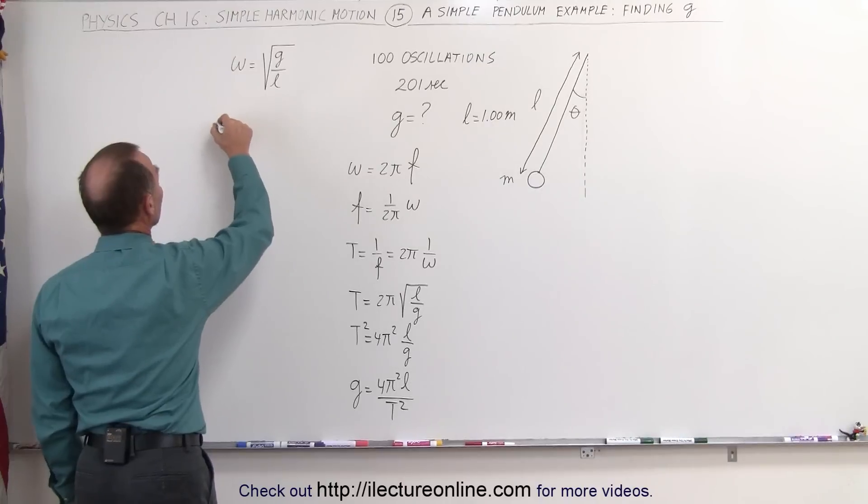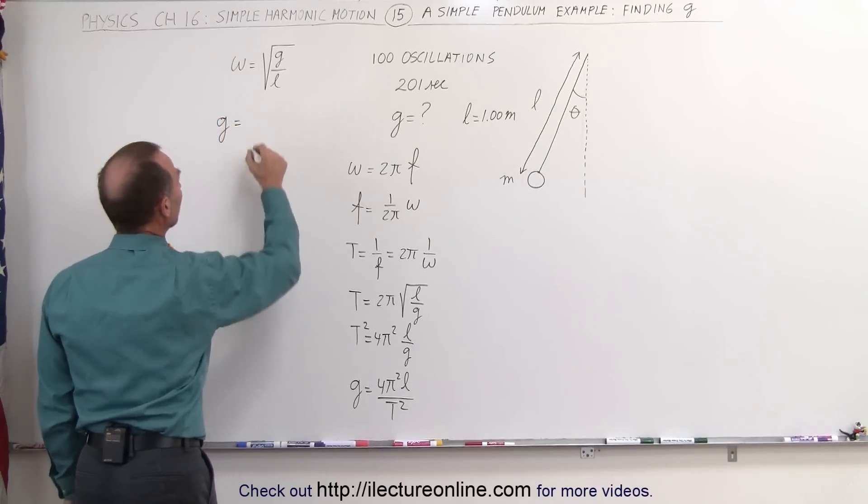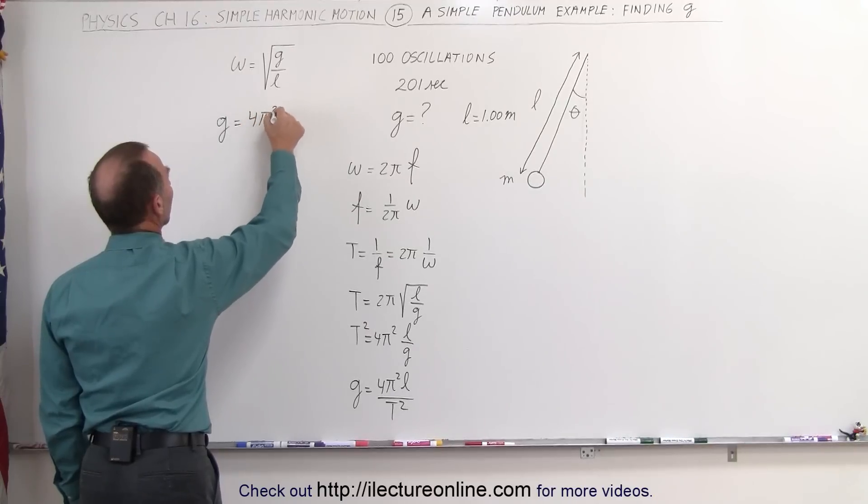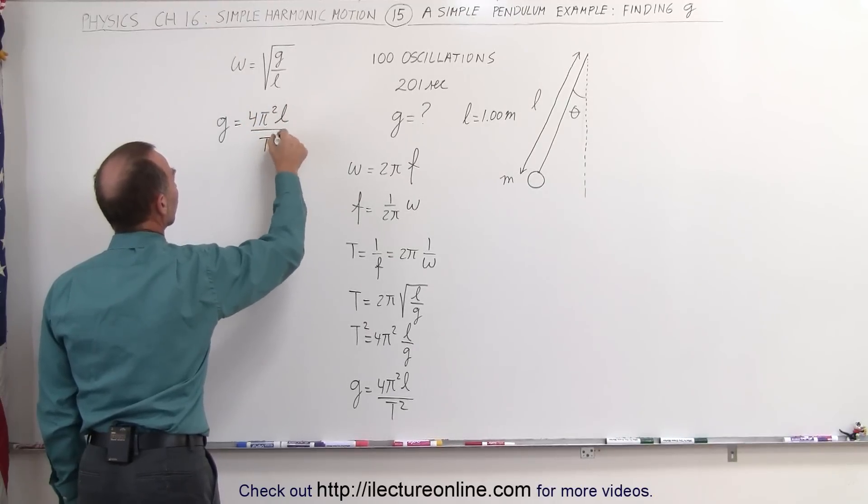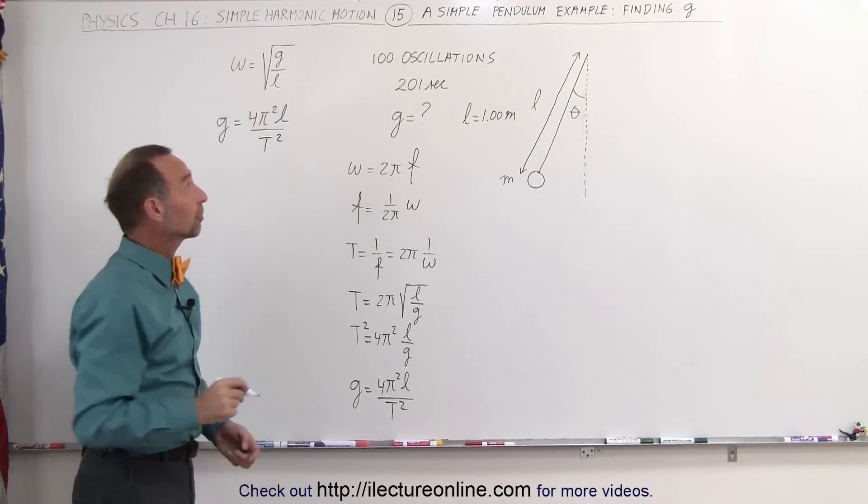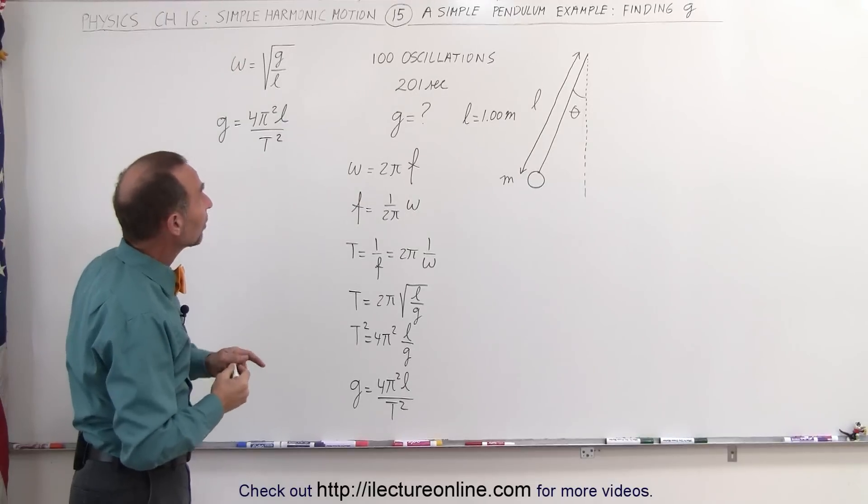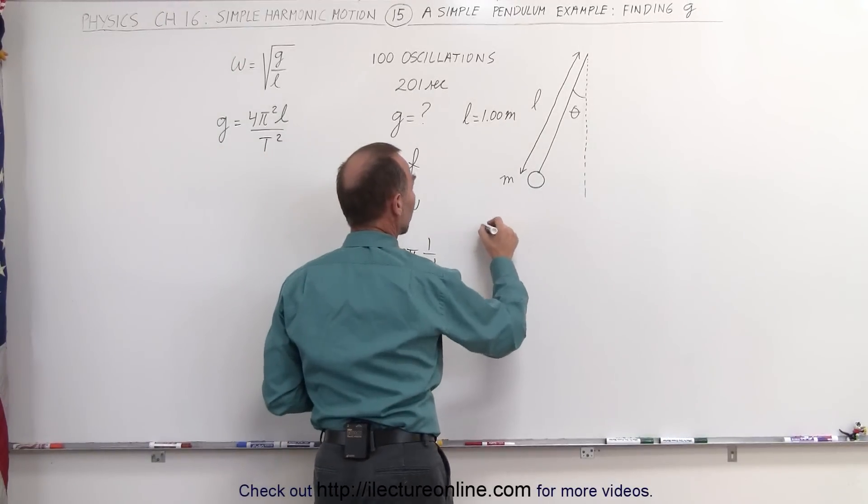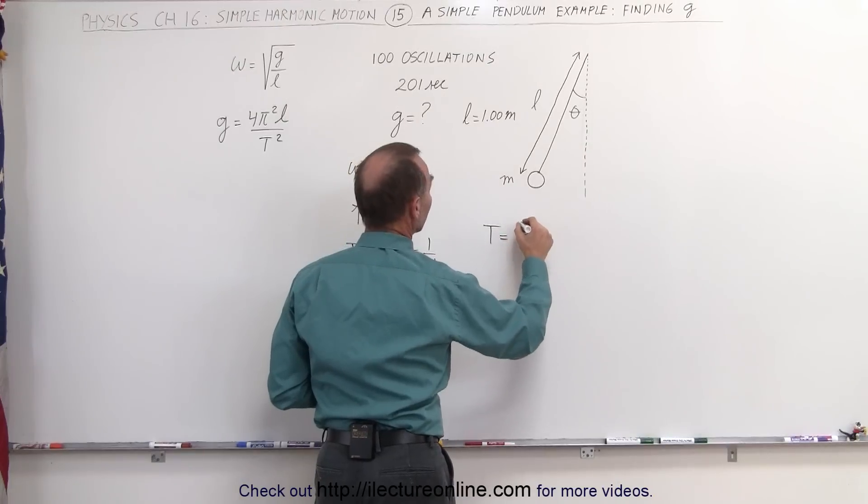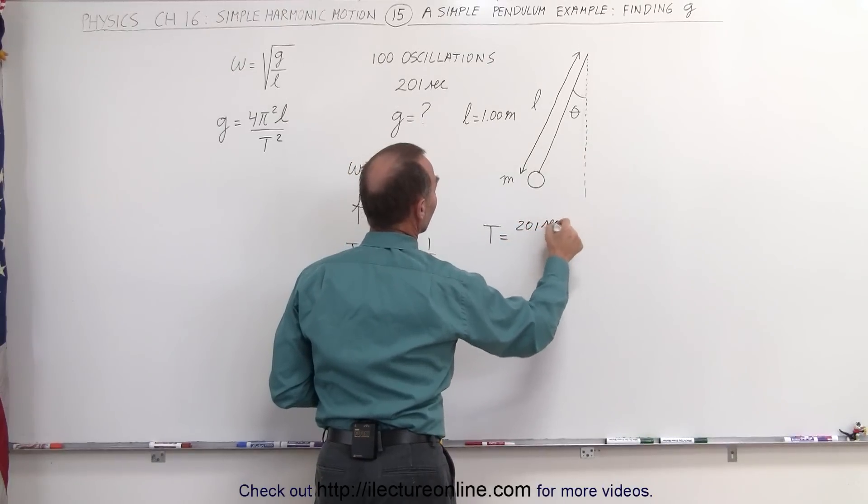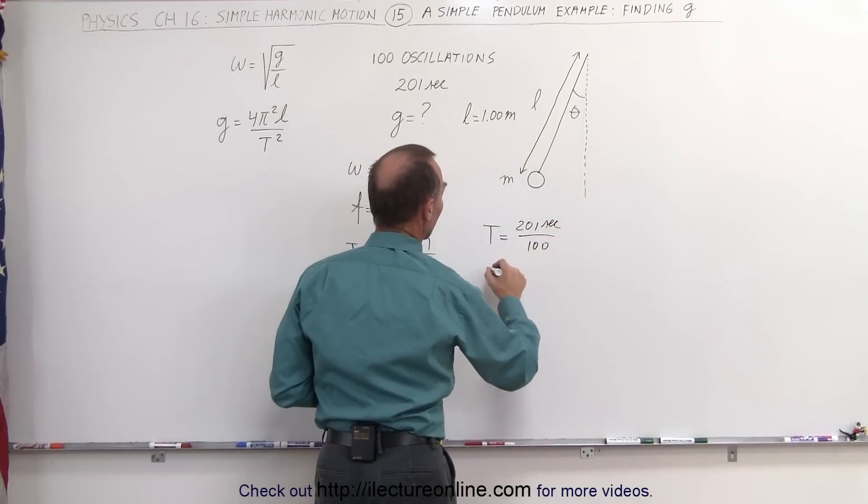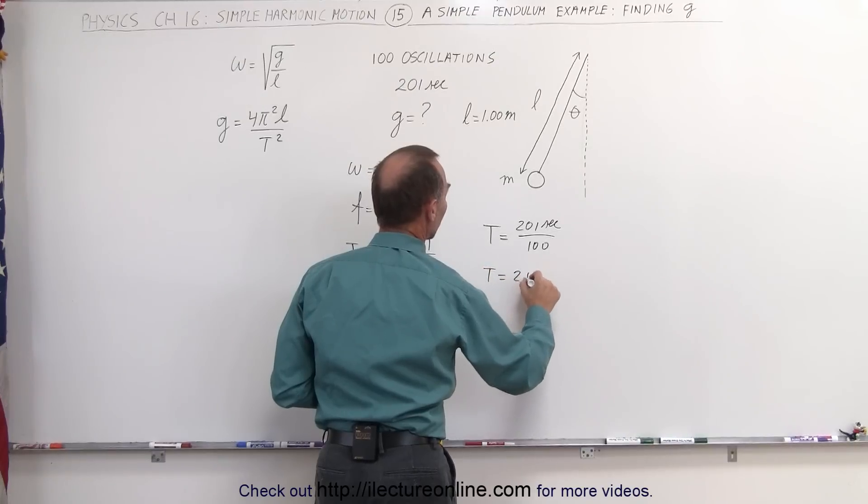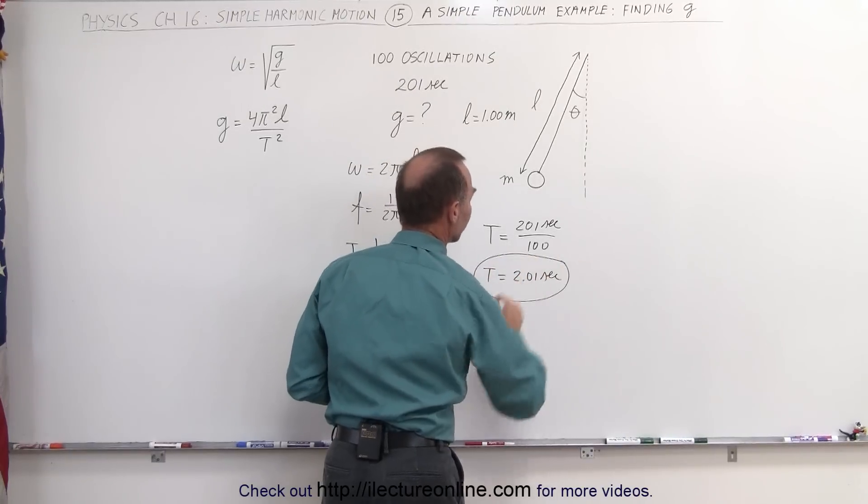If we plug that over here, g is equal to 4π² times the length divided by the period squared. And then we go back to our experiment. We have 100 oscillations taking 201 seconds. That means a single oscillation, the period of a single oscillation, is equal to 201 seconds divided by 100 oscillations. That means that the period is equal to 2.01 seconds for one oscillation.